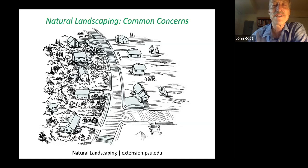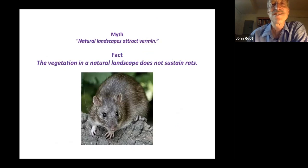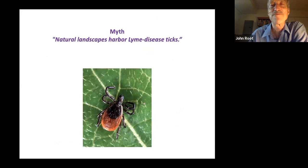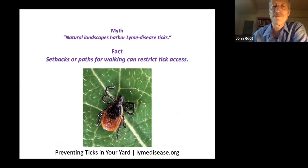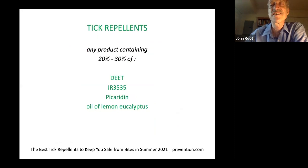The folks on the left have seen the light, but the folks on the right are concerned about the whole idea of natural landscaping. We have to address certain myths — natural landscapes don't attract vermin. Lyme disease ticks can be a problem, it's a legitimate concern, but if you plan it right and have setbacks or paths for walking, ticks have no way to attach themselves to you. If you don't make contact with plants, ticks have no way to attach. I invite you to visit lymedisease.org for more information on preventing ticks in your yard.